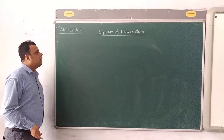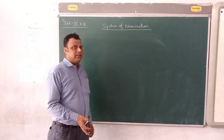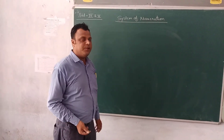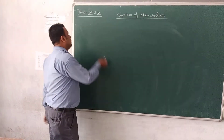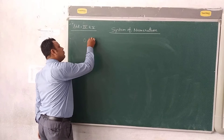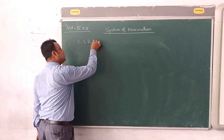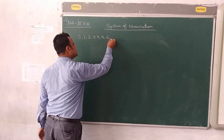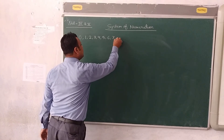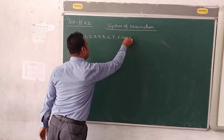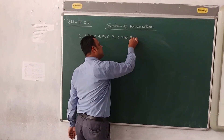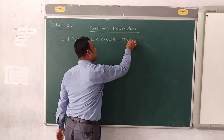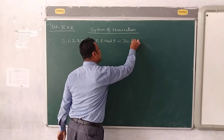First of all we have to know the symbols by which numbers can be written. These symbols are 0, 1, 2, 3, 4, 5, 6, 7, 8 and 9. These are 10 symbols and they are also known as digits.